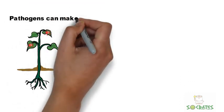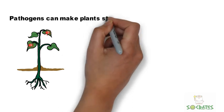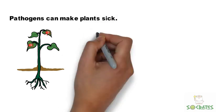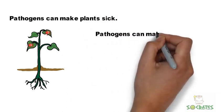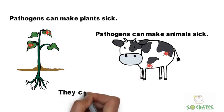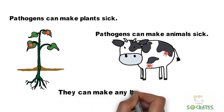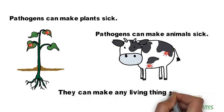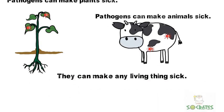Pathogens can make plants sick. Pathogens can make animals sick. They can make any living thing sick.